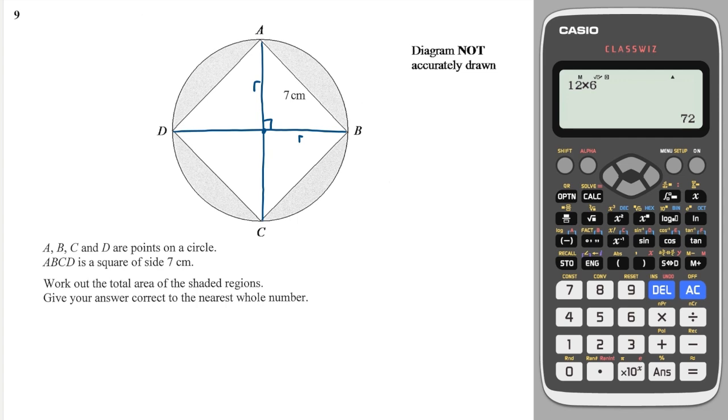Now, using Pythagoras's theorem, we can see that inside this right angle triangle here, we have r² plus r² is equal to the hypotenuse, which is 7². This gives me that 2r² is equal to 7² is 49.